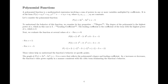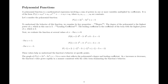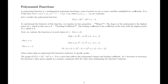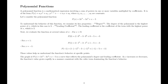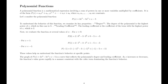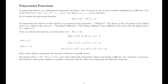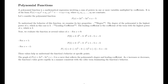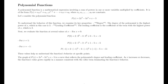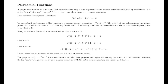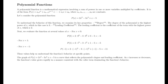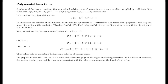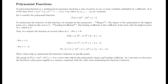Next, we evaluate the function at several values of x. For x = 0, p(0) = 2(0)³ - 3(0)² + 0 - 5, which is -5. For x = 1, p(1) = 2(1)³ - 3(1)² + 1 - 5, which is -5. For x = -1, p(-1) = 2(-1)³ - 3(-1)² + (-1) - 5, which is -11. These values help us understand the function's behavior at specific points.